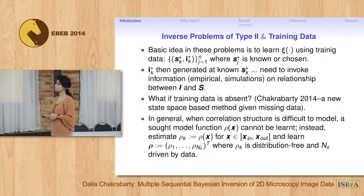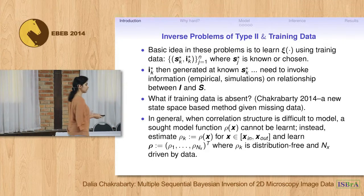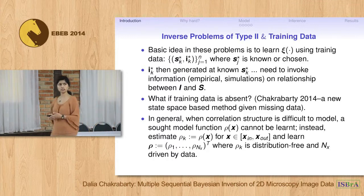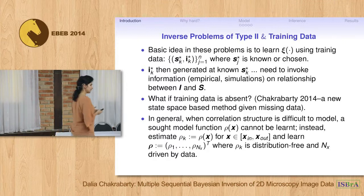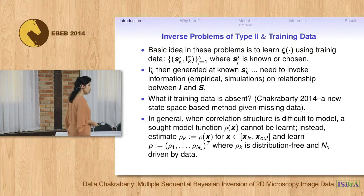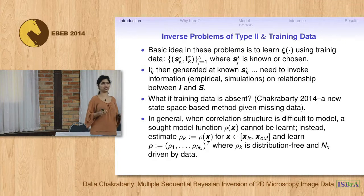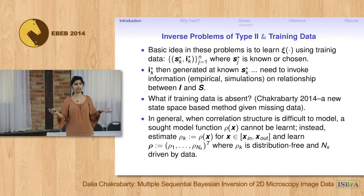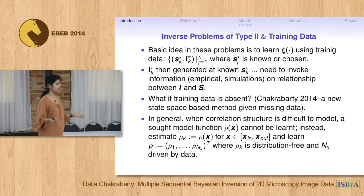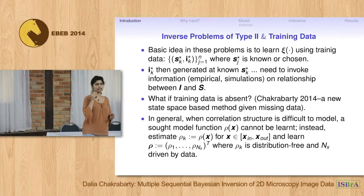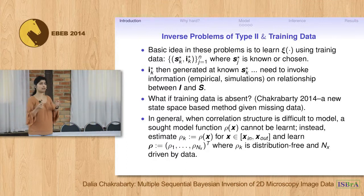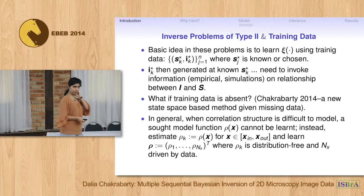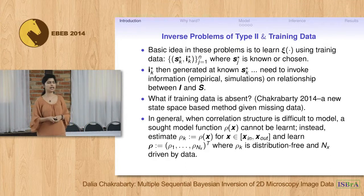The technical problem we are often faced with in real-life situations is the absence of training data. State-based modeling methodologies do exist, but in general that goes beyond inverse problems of type 2. When faced with a lack of training data, we must reduce our ambition — we can't learn the full correlation structure of the unknown function. Instead, we learn values of the function at chosen locations in the support, treating them as independent parameters that are distribution-free.